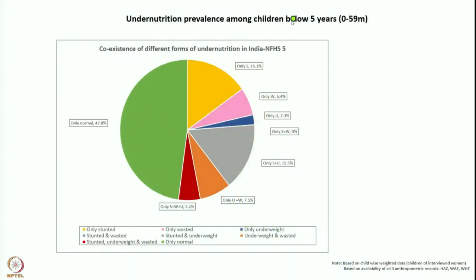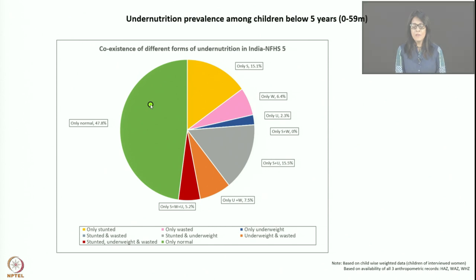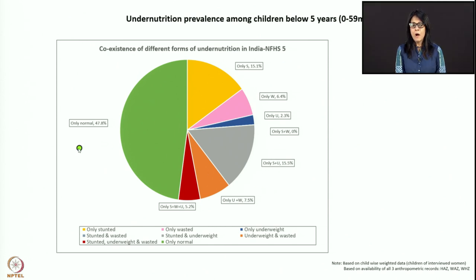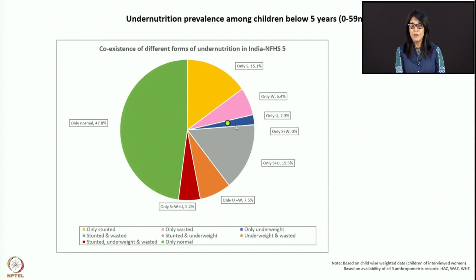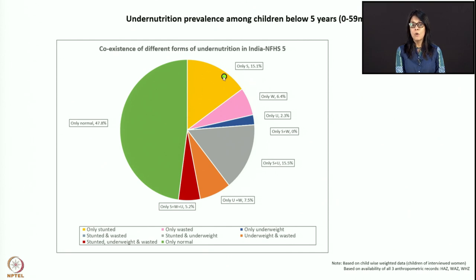This is a pie chart showing undernutrition prevalence among children below five years of age. About 47.8 percent are absolutely normal when it comes to wasting, stunting, and underweight. That's a pretty low number — you want almost 96 percent children in this category, but only 47.8 percent, which is almost half. About 15 percent of children are only stunted, with no underweight and no wasting.